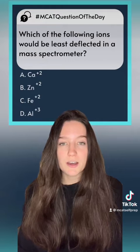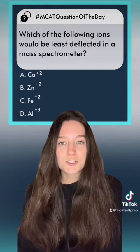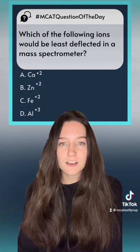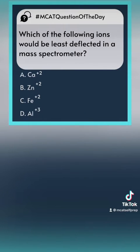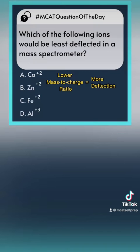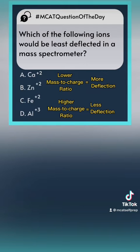Today's problem comes from lesson two of the chemistry one module. Be sure to pause the video and try the problem yourself before listening to my explanation. A mass spectrometer separates ions based on their mass-to-charge ratio, and the amount of deflection is inversely proportional to the mass-to-charge ratio. This means that ions with a lower mass-to-charge ratio will be more deflected, while ions with a higher mass-to-charge ratio will be least deflected.